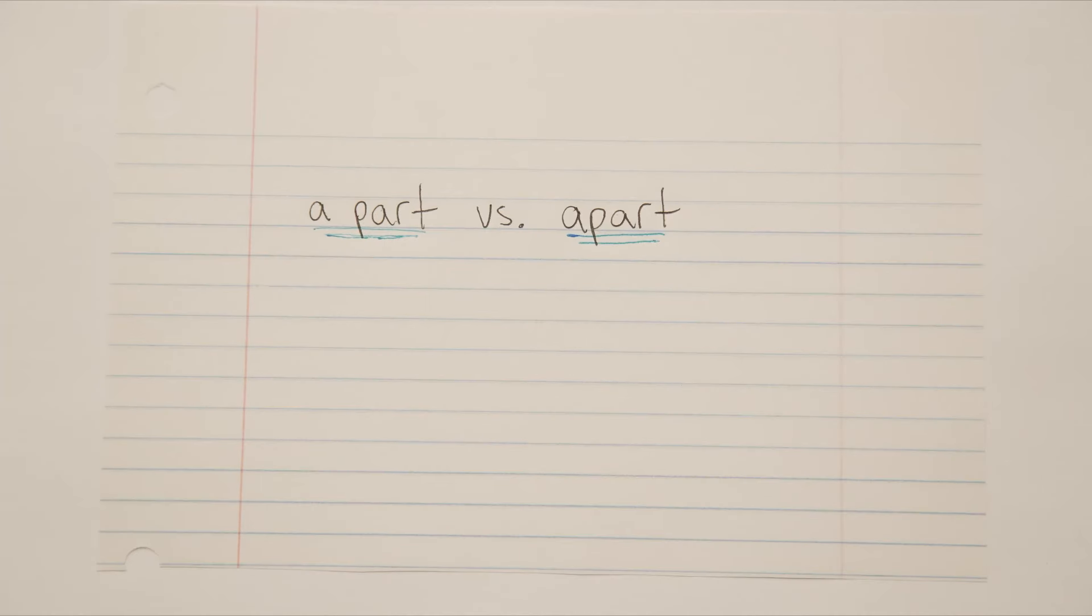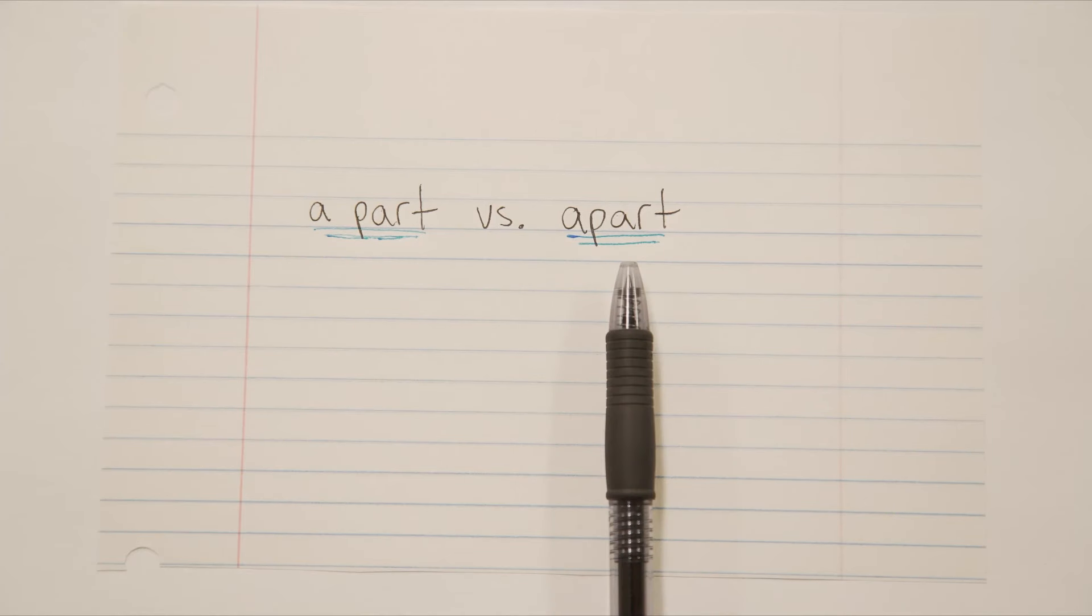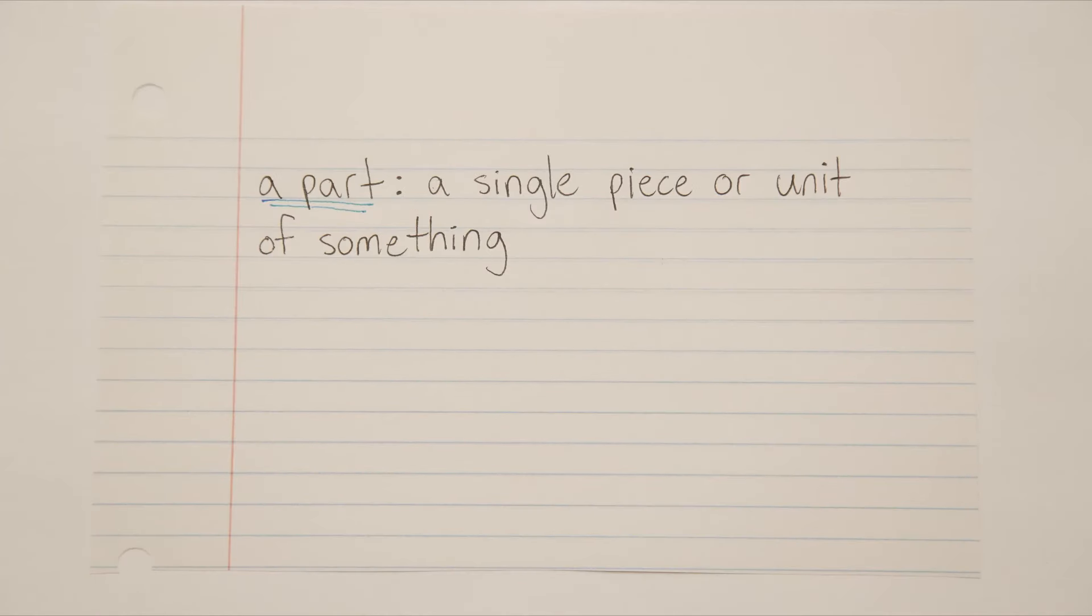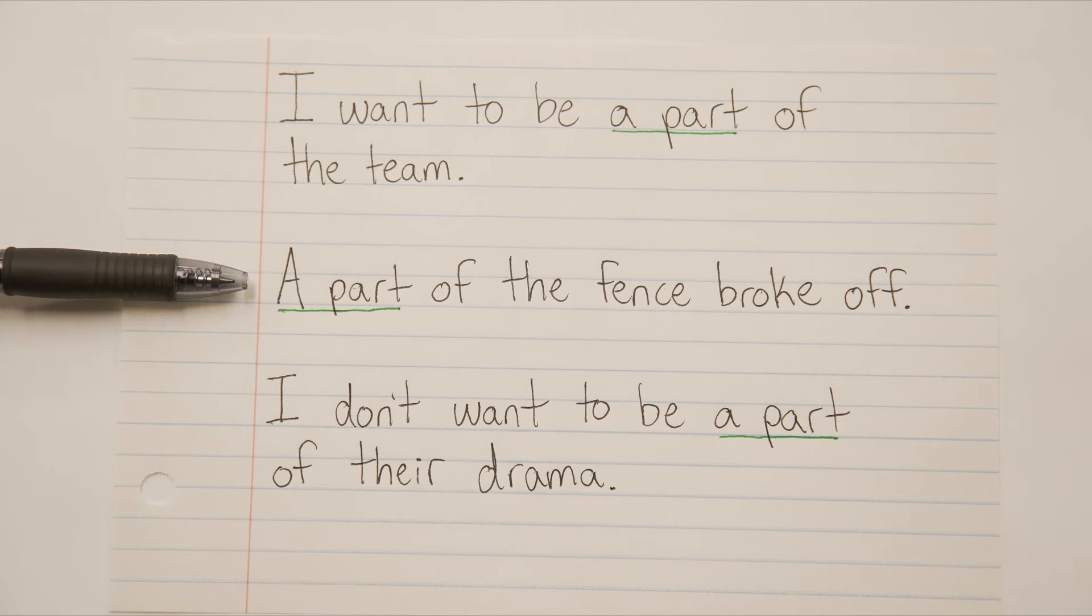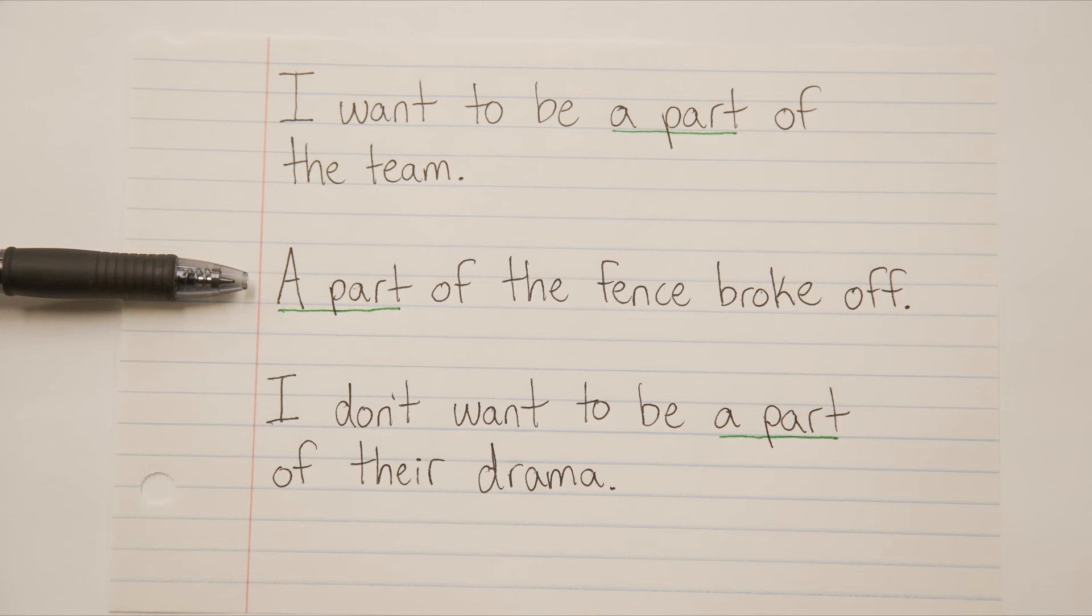And that brings us to our third and final pair of the lesson, and that is a part and apart. So a part, two words, just means a single piece or unit of something. Like I want to be a part of the team, meaning that I want to be a piece of it, a member. I want to be on the team. Or a part of the fence broke off, meaning that a piece or a chunk has broken off. Or I don't want to be a part of their drama, meaning that you don't want to be sucked into it. You don't want to be involved.